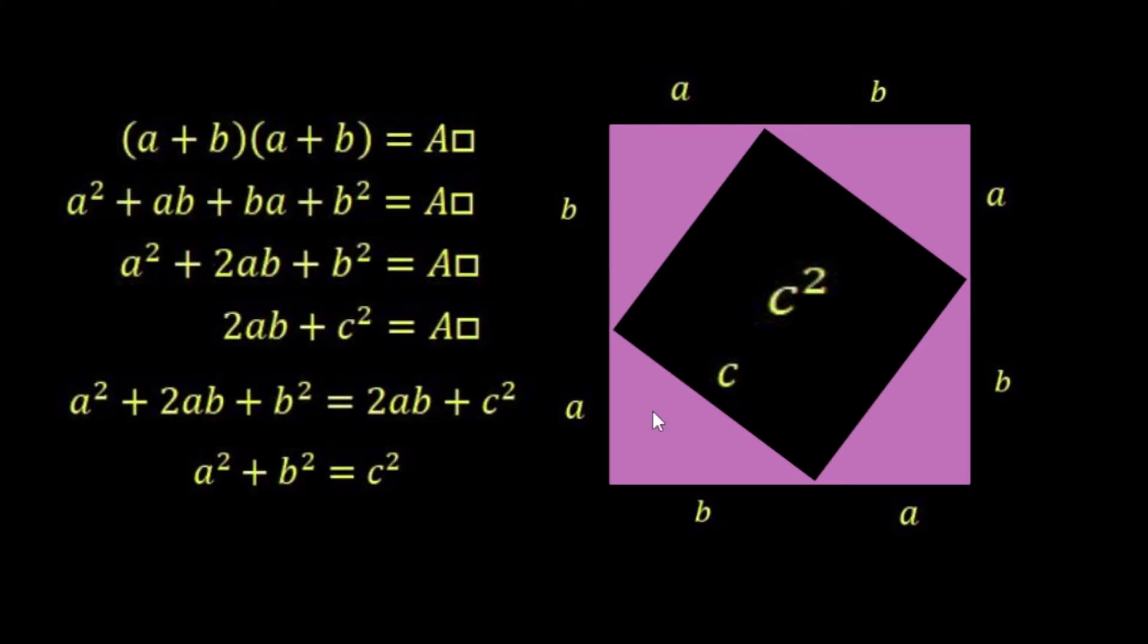And we can add on the area of these four pink triangles. The area of each triangle is going to be a half base times height, so it's going to be ½ab. So we've got ½ab four times, and we're going to add these four together. In total we're going to get 2ab. So this little geometric shape here tells us that the area of the large square is 2ab + c².